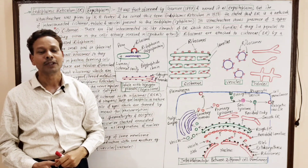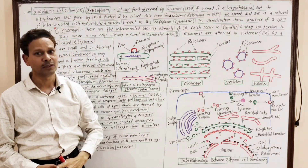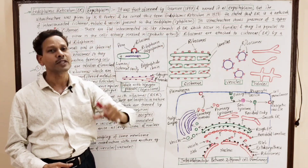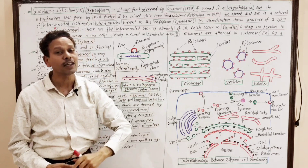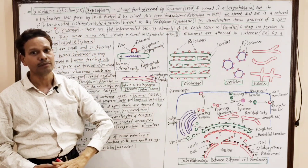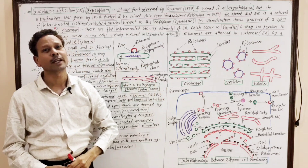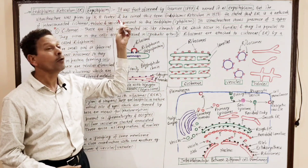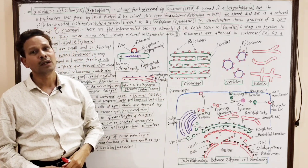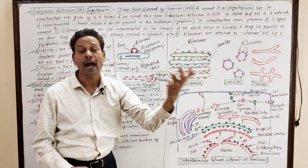The term endoplasmic reticulum was coined by K.R. Porter in 1953. But before this, the cell organelle endoplasmic reticulum was first observed by Garnier in 1897, and Garnier coined the term ergastoplasm. K.R. Porter coined the term endoplasmic reticulum in 1953, and he proposed the ultrastructure of this endoplasmic reticulum, stating that there is an interconnected network.